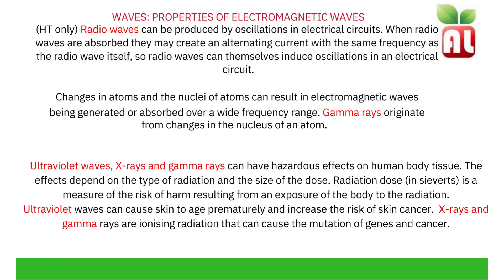Properties of electromagnetic waves. Radio waves can be produced by oscillations in electrical circuits. When radio waves are absorbed, they may create an alternating current, which is one in which the current changes direction, with the same frequency as the radio wave itself. So radio waves can induce oscillations in an electrical circuit. Changes in atoms and the nuclei of atoms can result in electromagnetic waves being generated or absorbed over a wide frequency range.